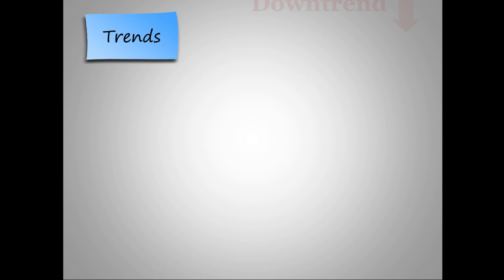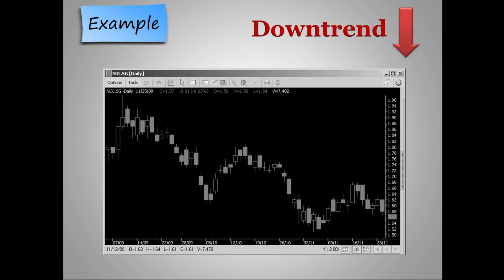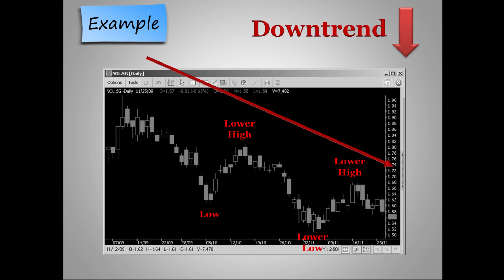On the downtrend, the reverse is true. We will see a lower high and a lower low. So how does this happen? A lower high and lower low is formed by more interest in selling in a particular counter. Before the price reaches its previous high, sellers are ready to sell at a discount. Similarly, buyers are only willing to buy at a lower price. This means there is stronger selling interest in the particular counter, hence the likelihood this counter will go down. We can observe in this example a clear formation of downtrends, showing clearly the lower lows and lower highs.